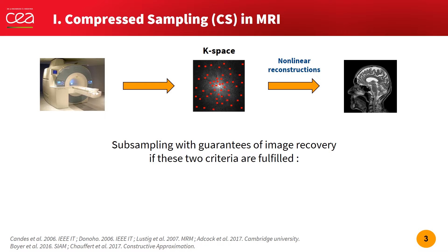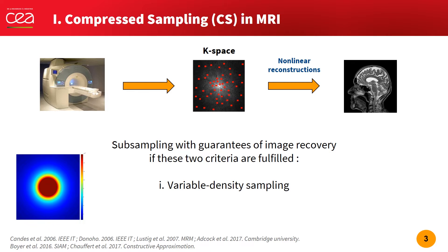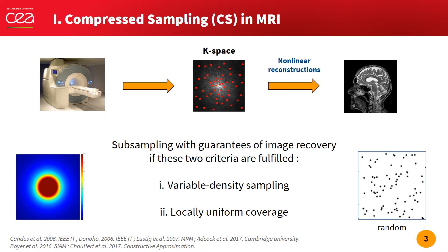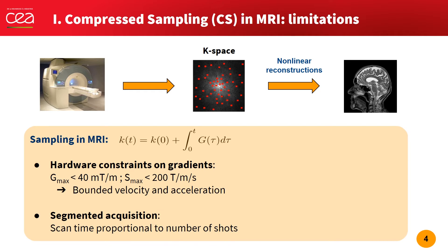It has been shown that the samples should be distributed along a variable density that is concentrated in the low frequencies of the k-space. Another more general principle for optimal sampling is to have a locally uniform coverage, which allows avoiding gaps and clusters of samples that are typical of random sampling. These two criteria are, however, difficult to respect in MRI, because samples are measured along very regular curves constrained by gradient amplitude and slew rate.